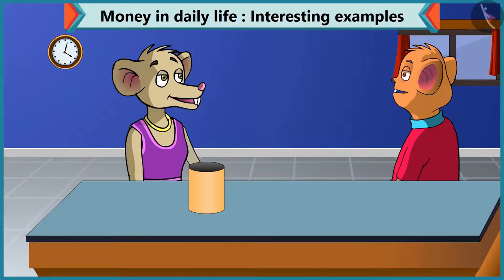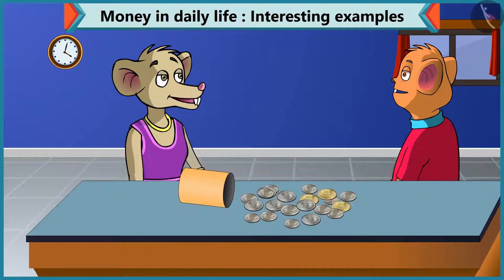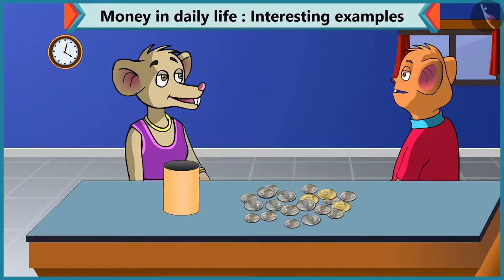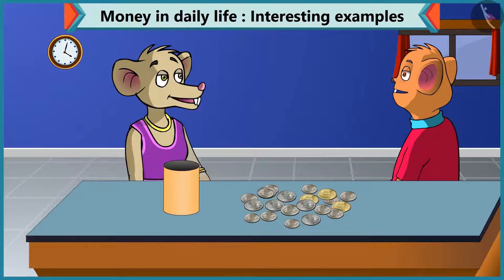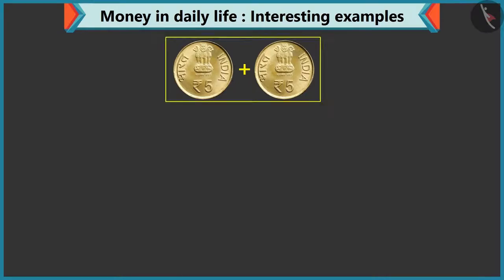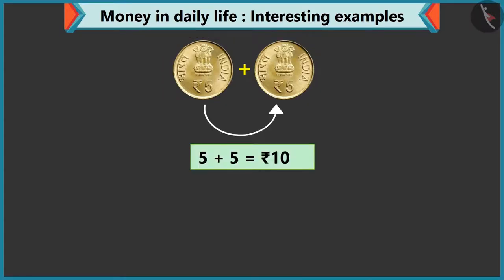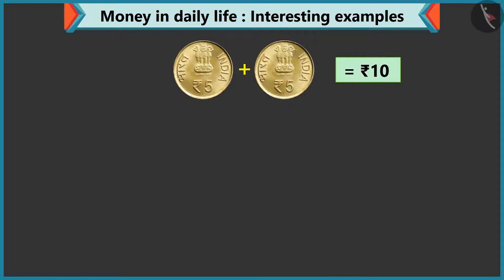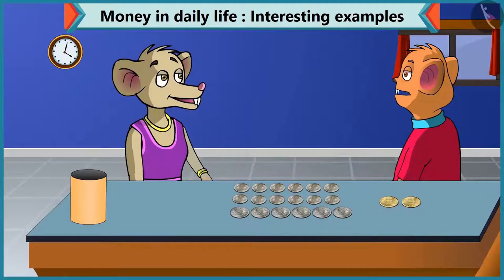Chi Chi says: Yes, I have many coins! You can add different coins to make 10 rupees. Look Chi Chi, adding 2 coins of 5 rupees makes 10. So you can also give me 2 coins of 5. Yes, adding 5 to 5 makes 10. You are right Chi Chi.